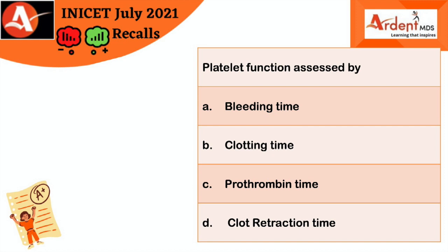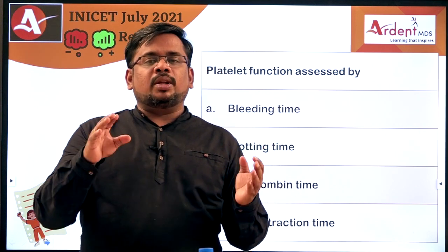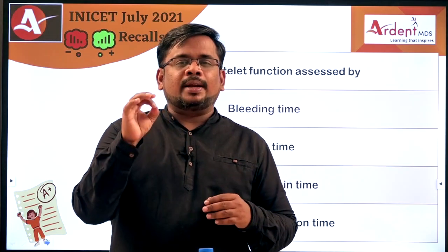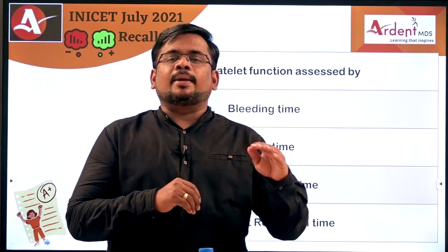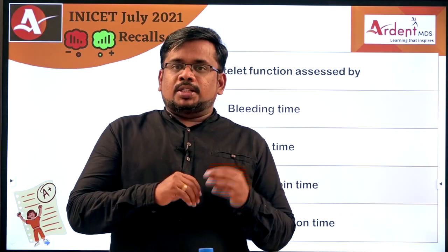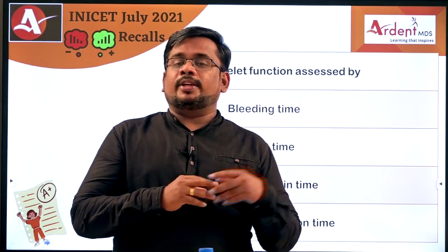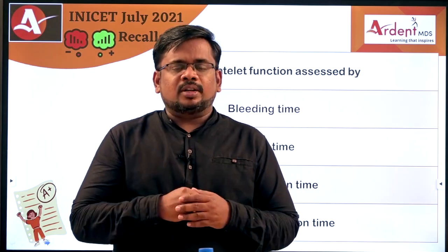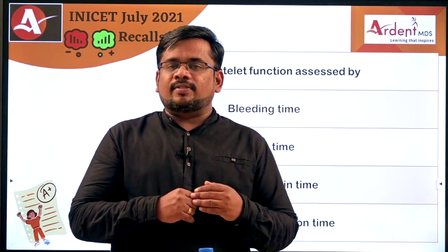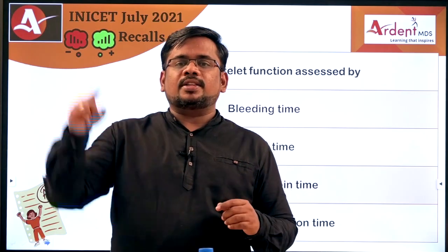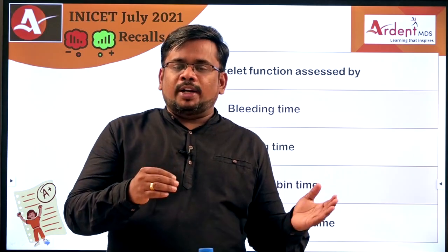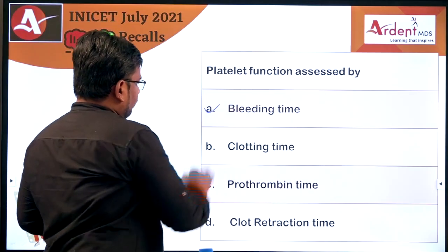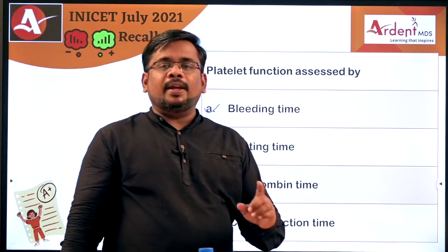The next question: platelet function is assessed by bleeding time. Bleeding time is the time taken for platelet plug formation at an injured area to temporarily stop bleeding. Later, this platelet plug is replaced by a clot — the time taken for clot formation is clotting time. Bleeding time requires platelets; clotting requires clotting factors. Deficiency of clotting factors increases clotting time, while a qualitative or quantitative defect in platelets affects bleeding time. So the answer is bleeding time.